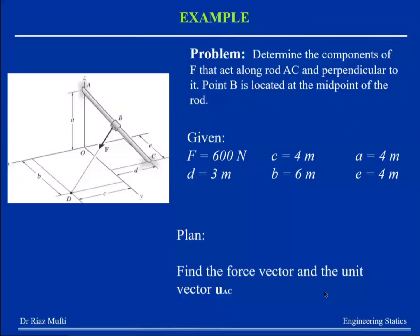Determine the components of F — the vector F — that act along rod AC. So I need to find the component of F that acts along AC, which is basically this projection here, and also perpendicular to it. So I need two components: one along the line AC and the other perpendicular to it.